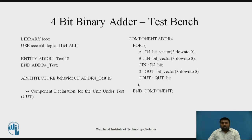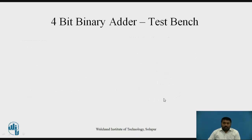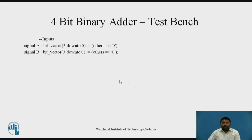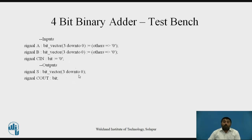Once you are done with the component declaration, you have to end the component. Then the next part is signals — what are the input and output signals associated with that. Signals A and B are taken, which are again of bit vector type. These input and output signals are going to be mapped with your component, and then you verify the waveform. So the same signals mentioned in the component have to be taken as inputs and outputs.